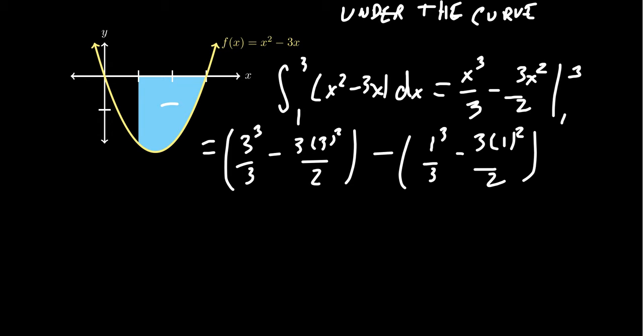In which case, we're going to end up with 27/3 - 27/2. One thing to watch out for when you do these definite integrals is that everything in the second part of the function when you plug in the 1 is going to be subtracted. 1/3 - 3/2. So make sure you subtract all of these.